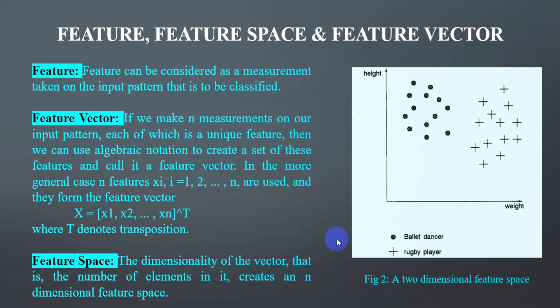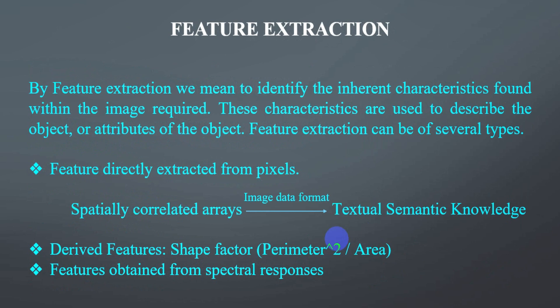The next topic is feature extraction. By feature extraction we mean identifying the inherent characteristics found within an image. These characteristics are used to describe the object or attributes of the object. Feature extraction can be of several types: features directly extracted from pixels, derived features like shape factor (perimeter squared divided by area), and features obtained from spectral responses. This feature extraction is described on the basis of image input, which is why we are talking about pixels.